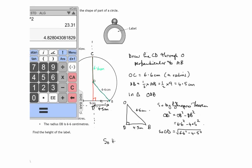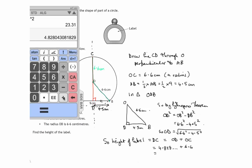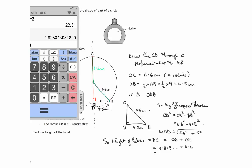So height of label which is the line DC and that's OD plus OC. And OD we've just calculated as 4.828 and so on. OC we know is 6.6. So when we add 6.6 to that answer that we just had, we'll get 11.428 and so on.